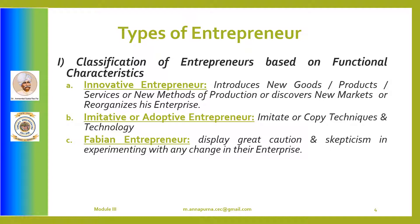Fabian entrepreneurs display great caution and skepticism in experimenting with any change in their enterprise. They adopt changes only when there is an imminent threat to the very survival of their enterprise, and usually imitate other innovations only when they are certain that failure to do so could be detrimental for their business. They are very doubtful and skeptical in their approach towards adopting new technology or trade, and are not dynamic and adaptive. They are very cautious about their moves.